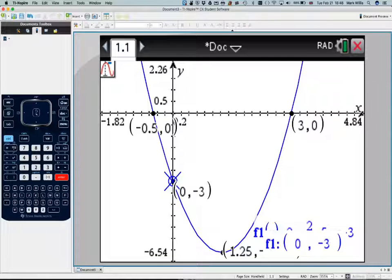Okay, so we've now got the two x intercepts, the y intercept, and we've got the minimum point.